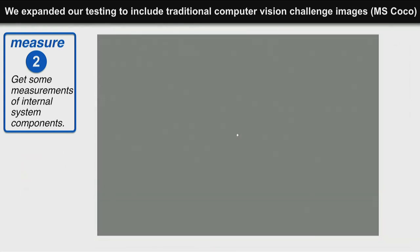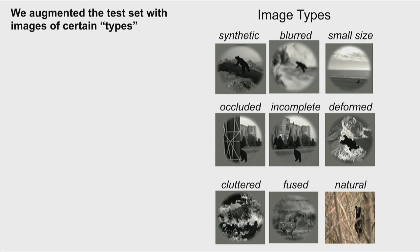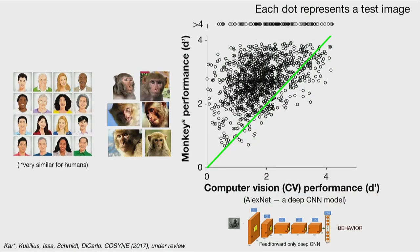We can do exactly the same thing I showed you yesterday, where either animals or humans are tested on images of both types. We also inserted into the test images designed to expose human advantages: synthetic images, blurred images, small images, occluded images, incomplete objects with parts cut out, deformations, and natural photographic versions. We tried to augment the image set in ways that would expose differences between networks and brains, then collected a lot of behavioral data.